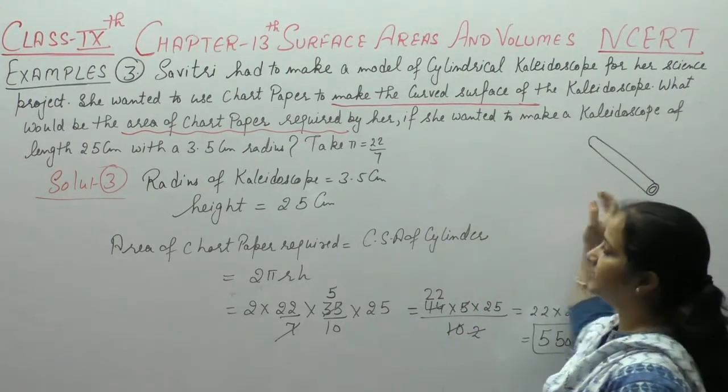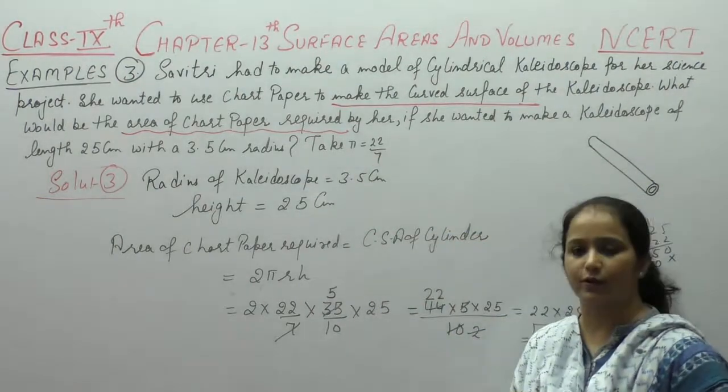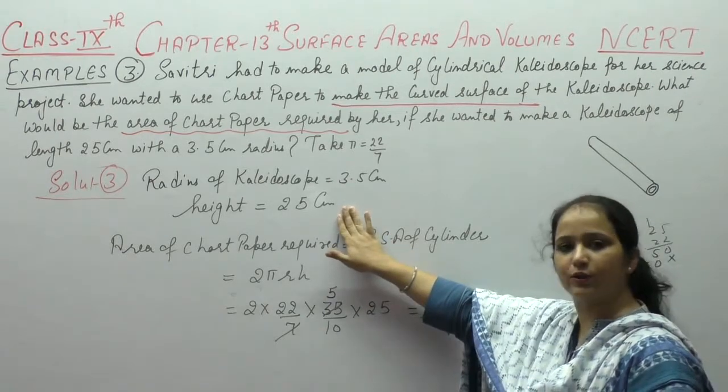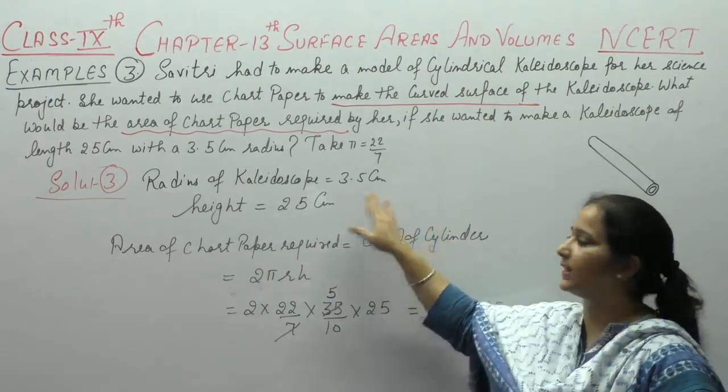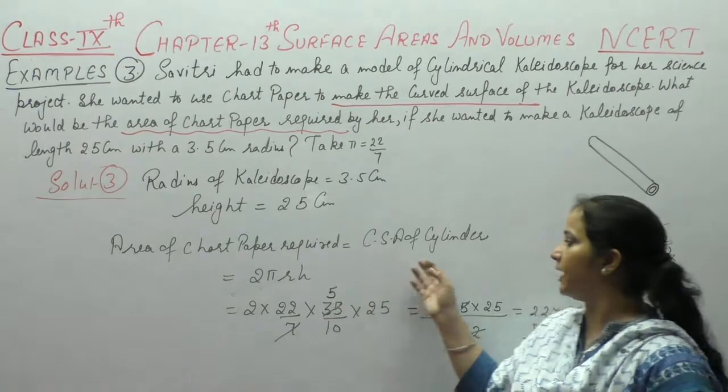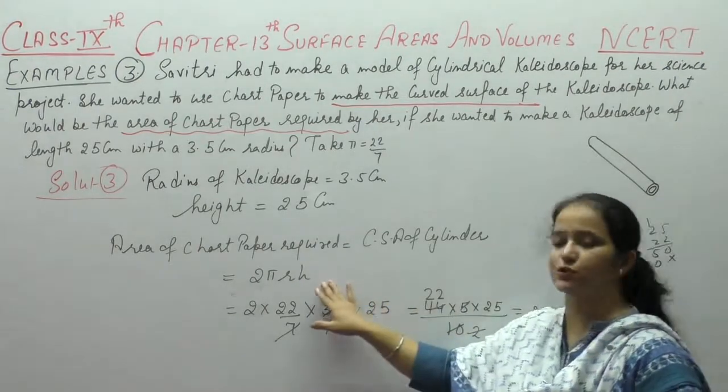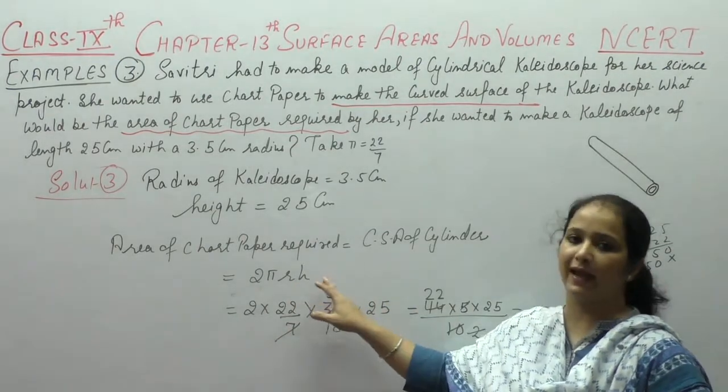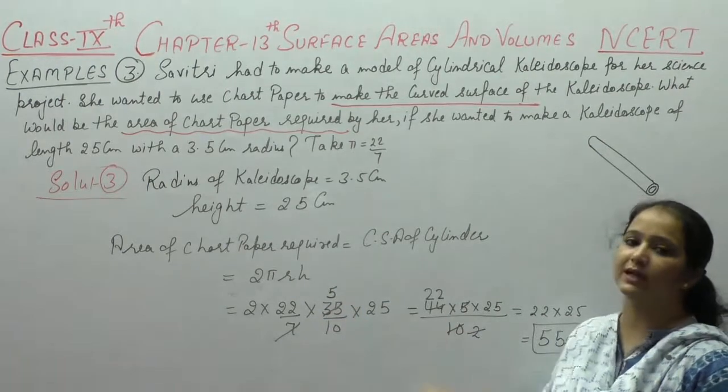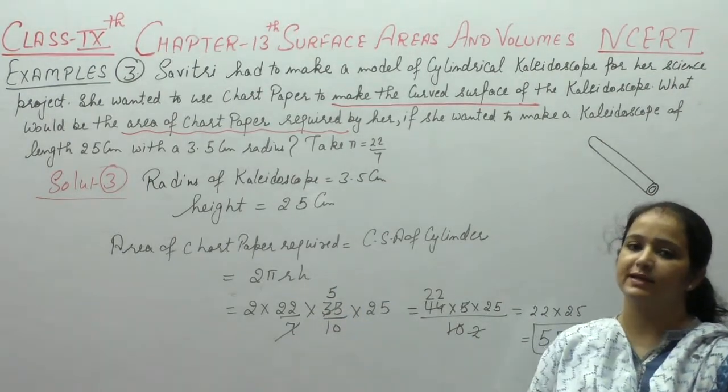If the length and radius are given, kaleidoscope length means height in the cylinder case. Radius knows. Area of chart paper required, curved surface area of cylinder is 2 pi r h. Radius bhi hai, height bhi hai. Values put ki. 550 cm square.